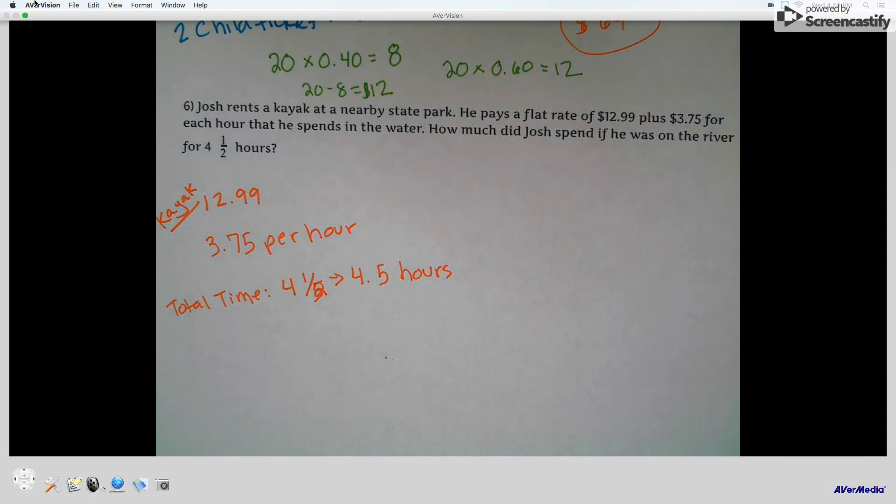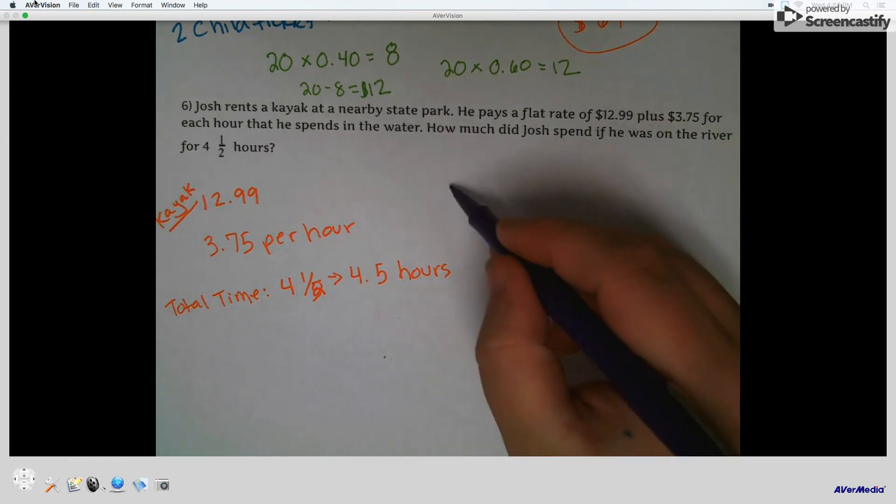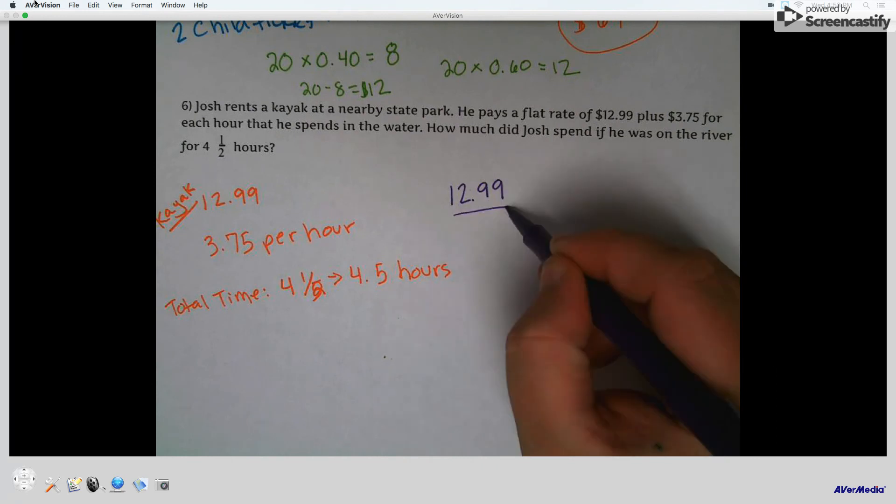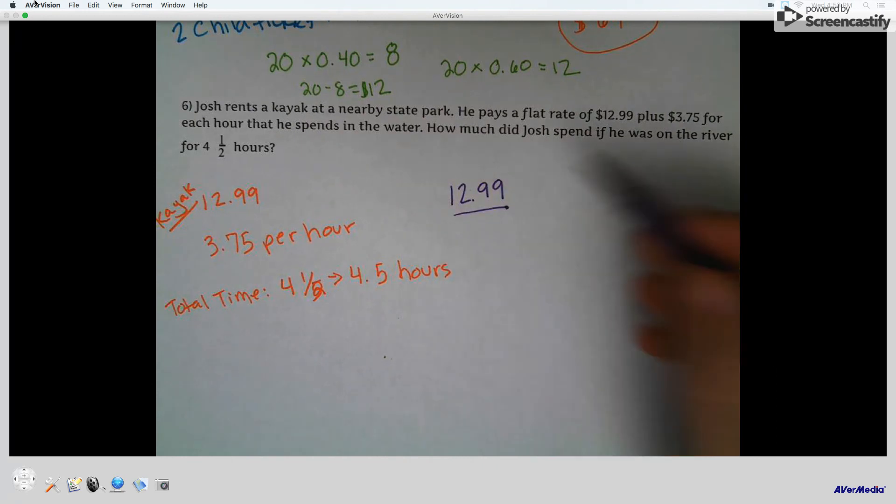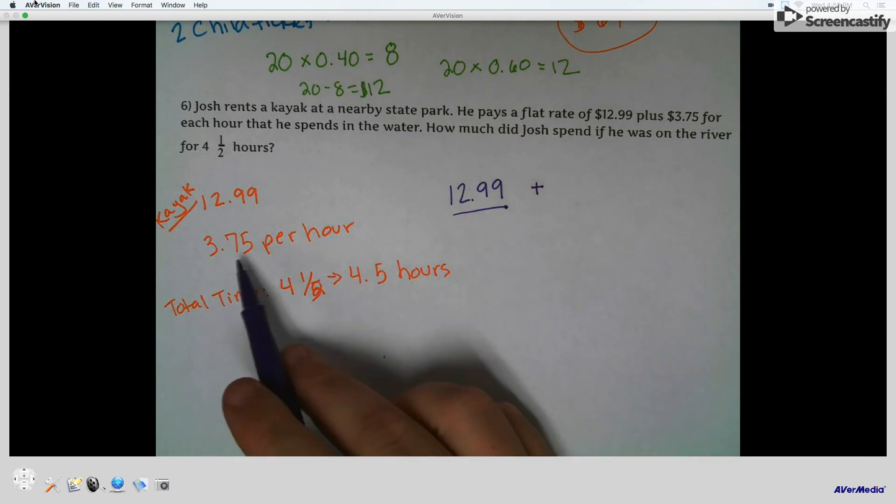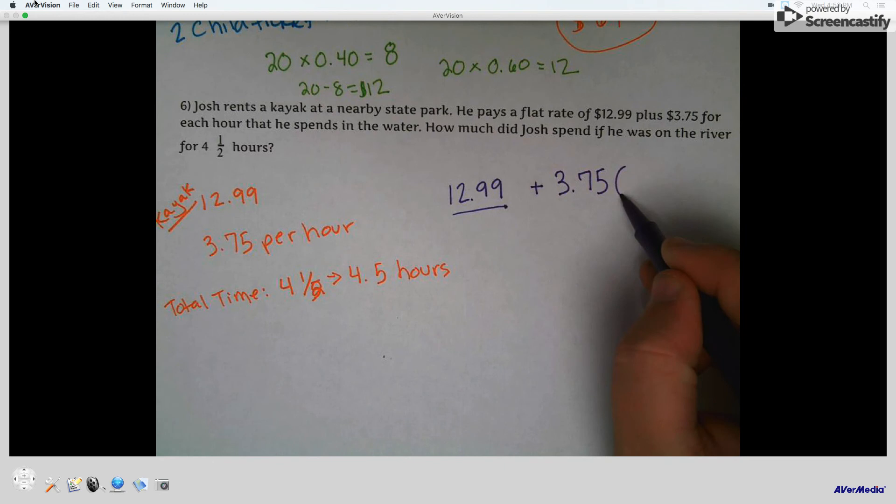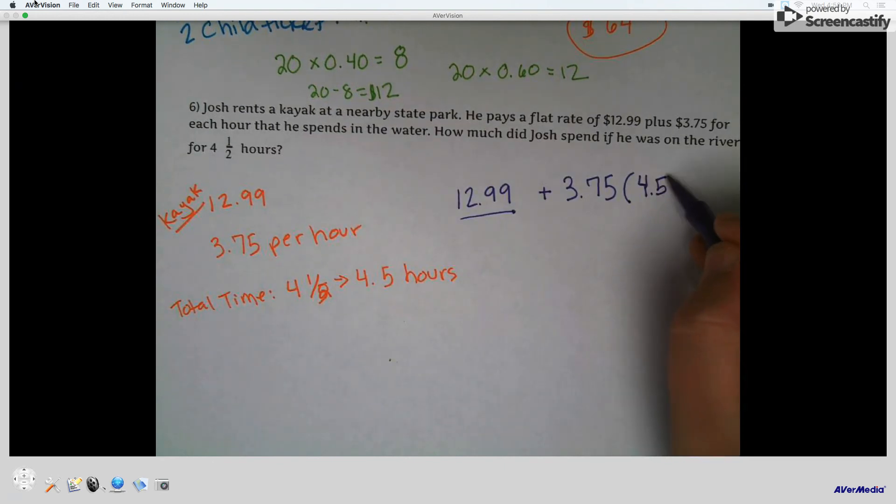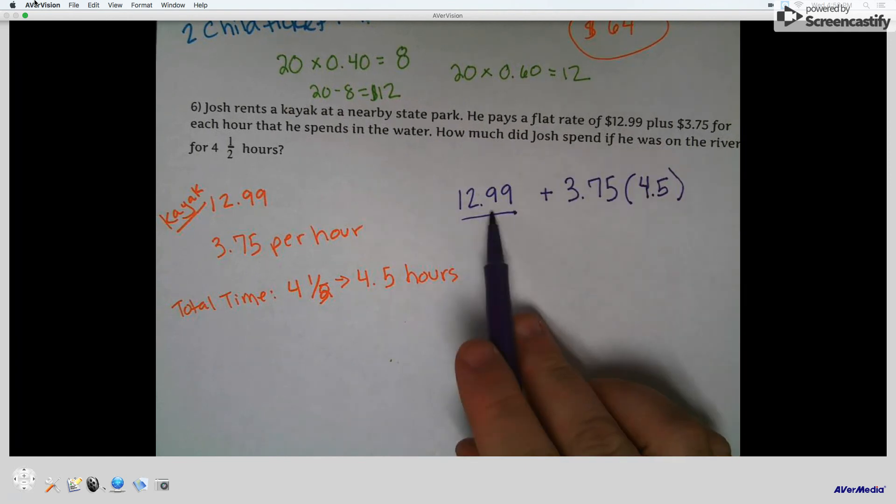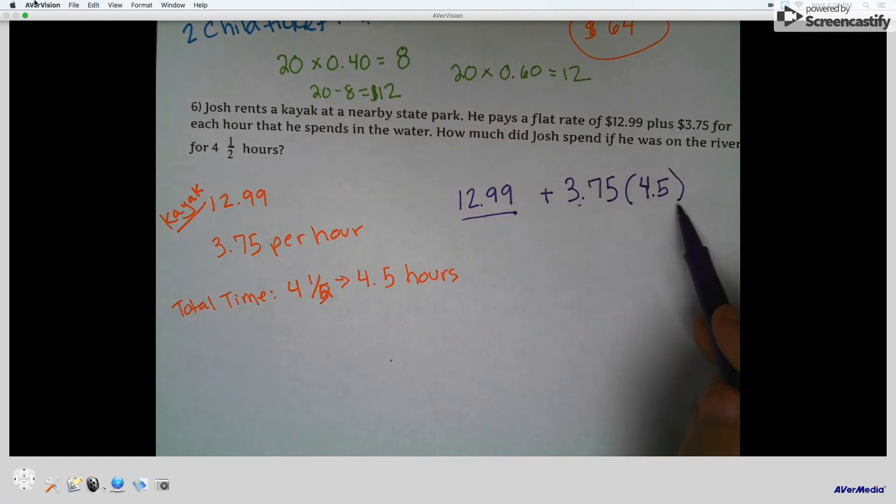This one can be tricky because right off the bat, whether he spends 55 hours or 55 seconds in the water, he has to pay $12.99. Right off the bat, he's got to pay $12.99. Then he pays $3.75 per hour. And the total hours, yeah, it's 4.5.